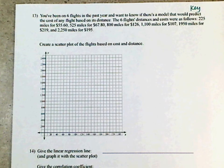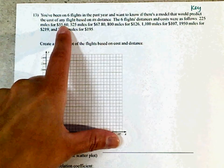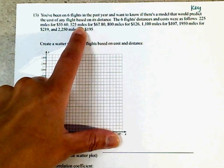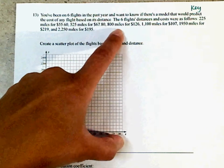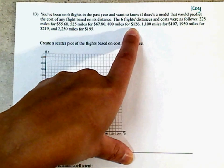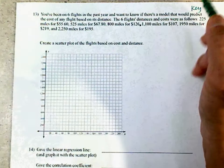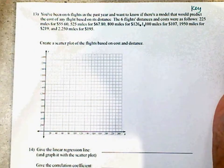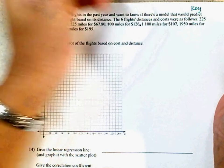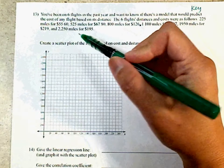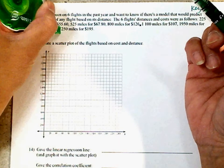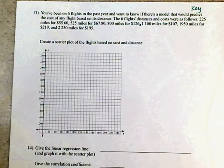You've been on six flights in the past year. I want to know if there's a model that would predict the cost of any flight based on its distance. So basically, we're looking for a best line of fit. The six flights, distances, and costs were as follows: 225 miles for $55.60, 525 miles for $67.80, 800 miles for $126, 1,100 miles for $107, 1,950 miles for $219, and 2,250 miles for $195. We're going to take away the commas.